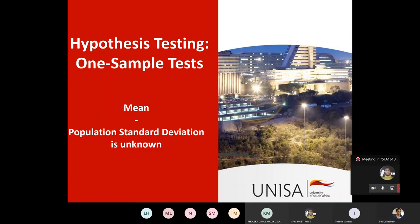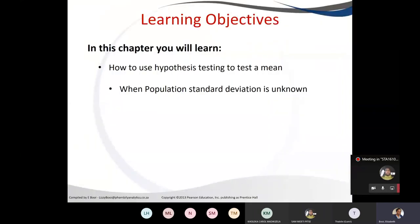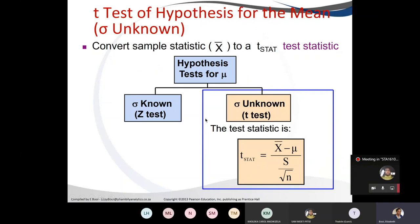When the population standard deviation is unknown, we use a t-test, which means we go to the t-table to find the critical value. We use the test statistic t, and since we are given the sample standard deviation, we have s, not sigma.